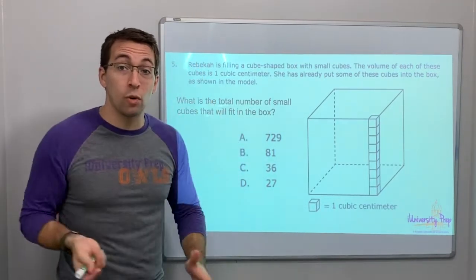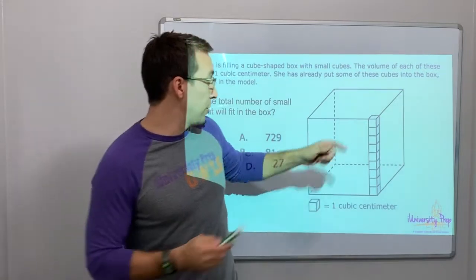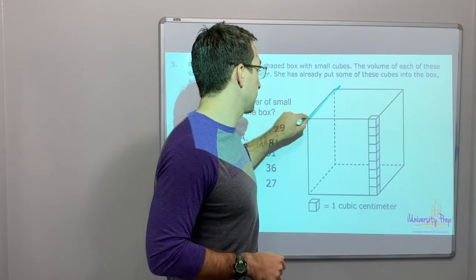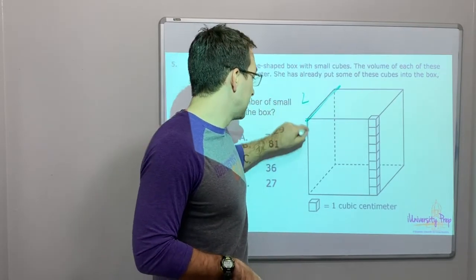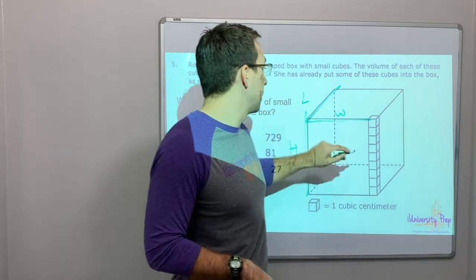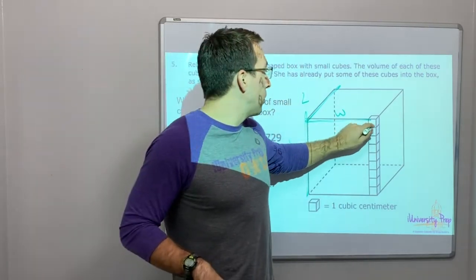Cube is like a square. So let's count them and then we'll multiply length times width times height, right? Length times, you know, height and width. LWH.